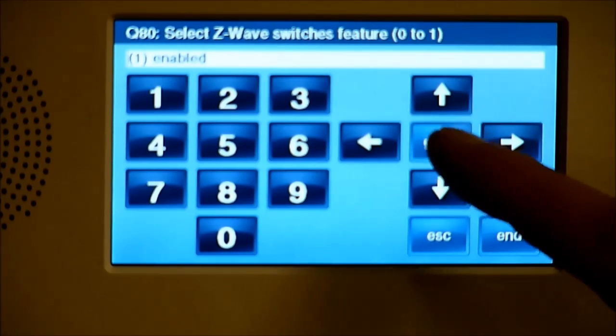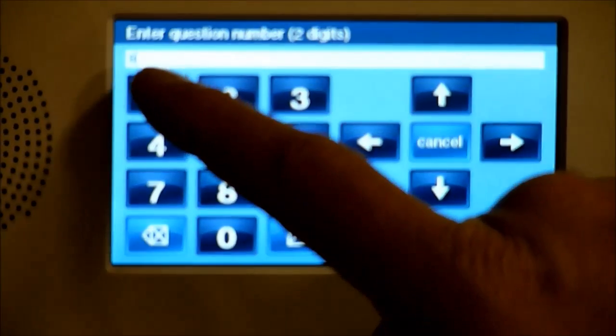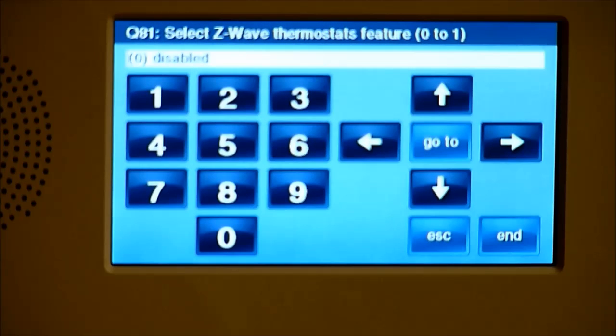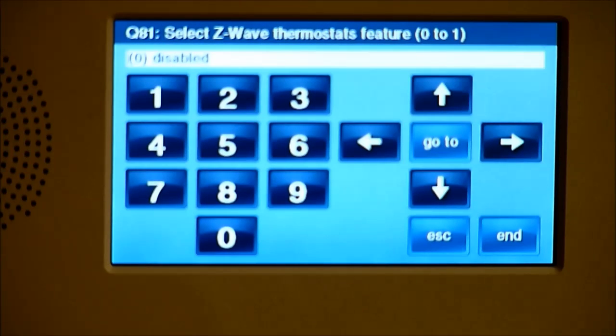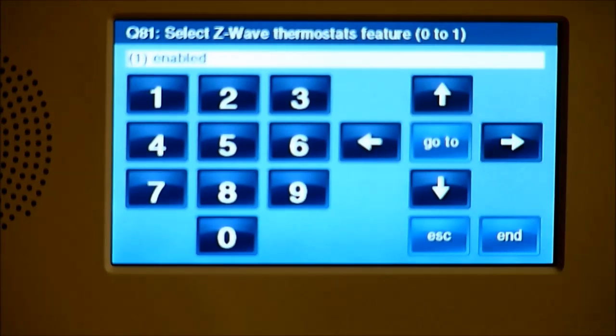Then we'll hit Go to 81. And this is for the thermostats to enable thermostats. So again, hit the right scroll arrow to enable it and turn it on. And that's all you need to do there.